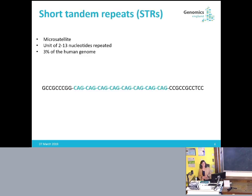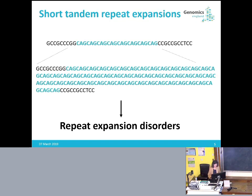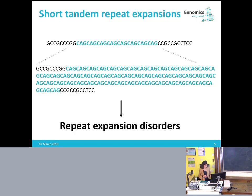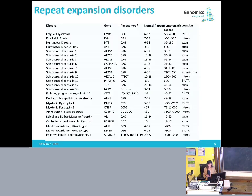What are short tandem repeats? They are small DNA sequences repeated a number of times in a row. For example, a 3-nucleotide sequence such as CAG repeated many times. A short tandem repeat expansion is a unique type of mutation causing the number of repeats to increase beyond a pathological threshold. There are a number of disorders caused by repeat expansions, collectively known as the repeat expansion disorders.